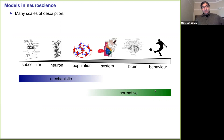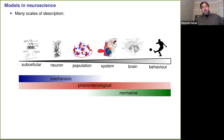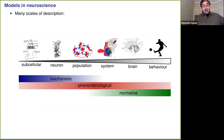Because the system we're looking at is an evolved one, selected over millennia, we can also look for a different kind of explanatory model — asking why the particular arrangement we see has been selected amongst all other possibilities. These are really questions about what function a particular structure serves for the organism as a whole. These come top-down; I call them normative, or computational models. There's also a class of models that are more descriptive — I call these phenomenological — seeking to capture in a mathematically concise way the function or behaviour that we observe.